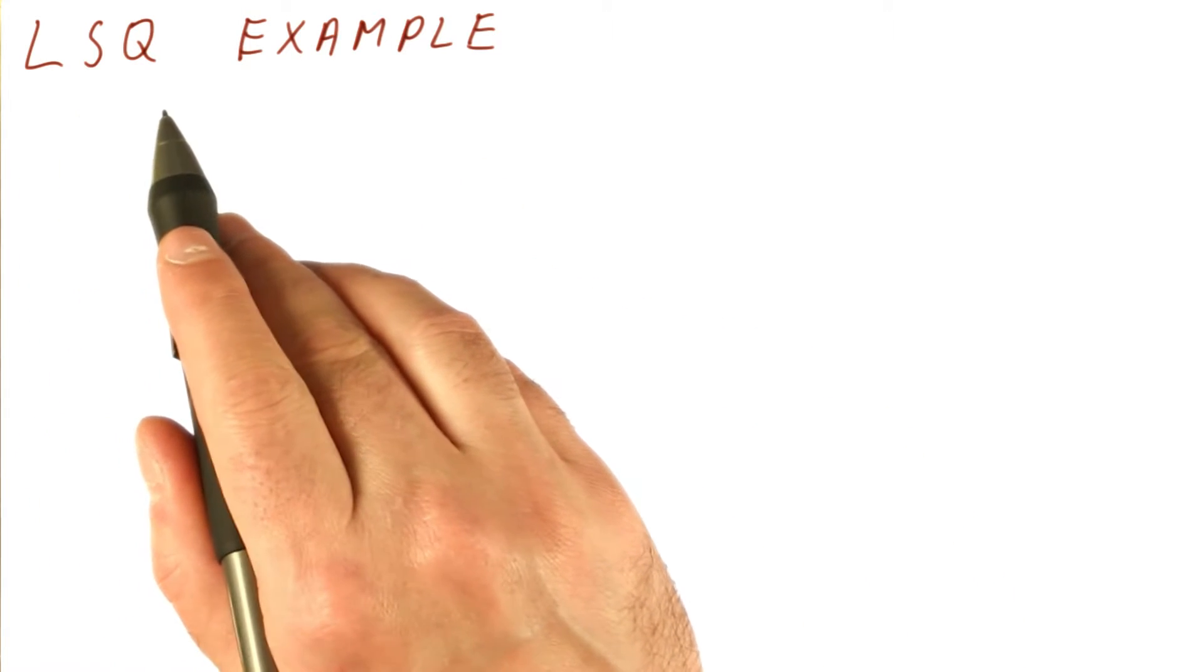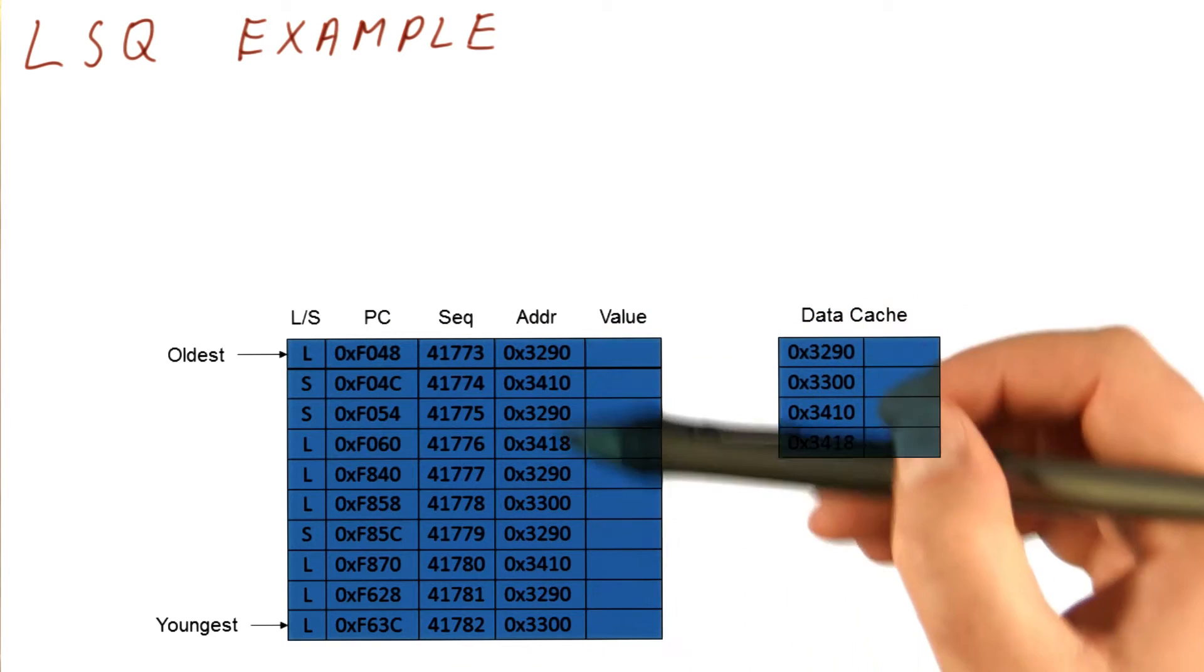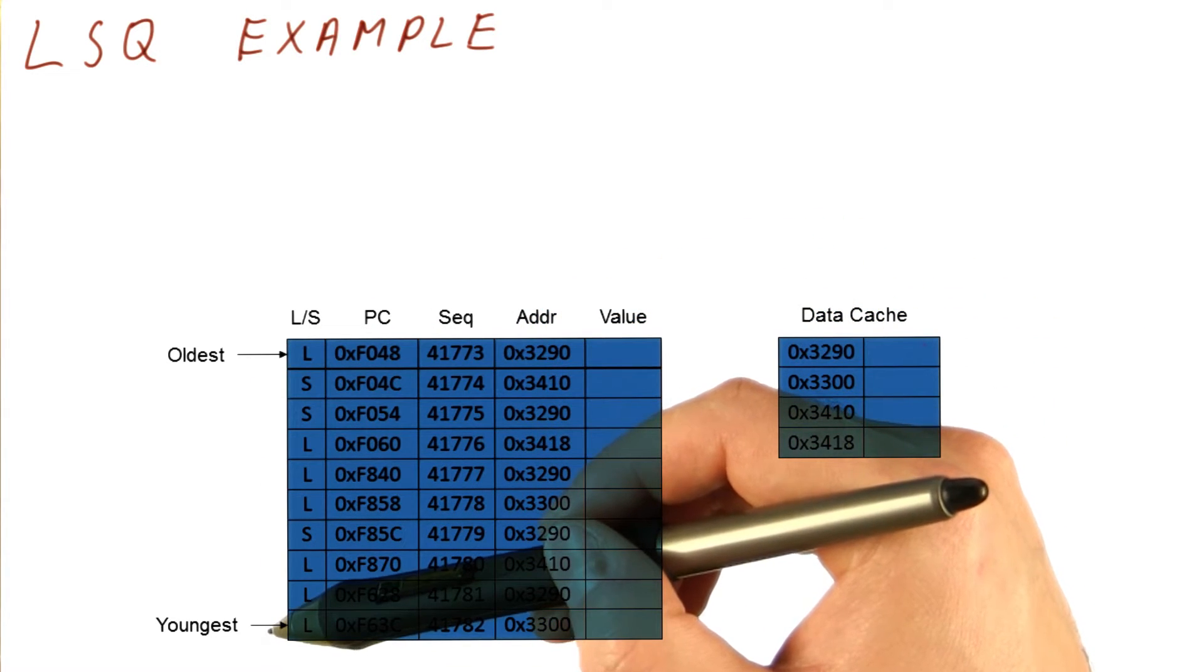Okay, to illustrate the operation of the LSQ, we will do an example. So here I have a load store queue where this is the oldest instruction and this is the youngest instruction in the queue.